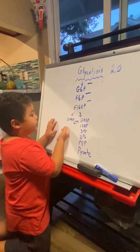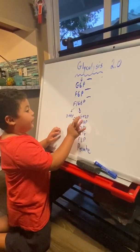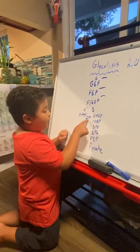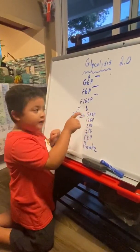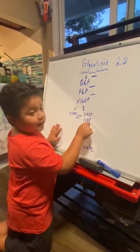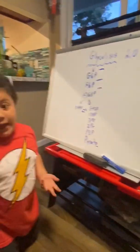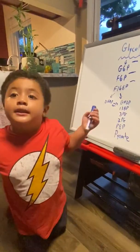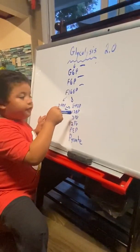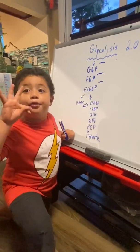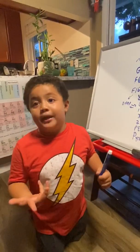Now, dihydroxyacetone phosphate mostly goes to glyceraldehyde-3-phosphate — how? Triosephosphate isomerase. Now, glyceraldehyde-3-phosphate is going to become 1,3-bisphosphoglycerate, and then 1,3-bisphosphoglycerate is going to become 3-phosphoglycerate — how? This is a big enzyme, it's called phosphoglycerate kinase, kids.